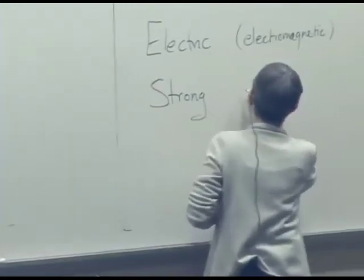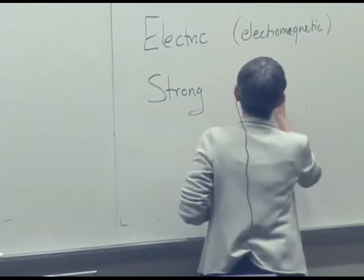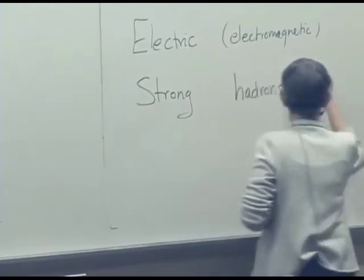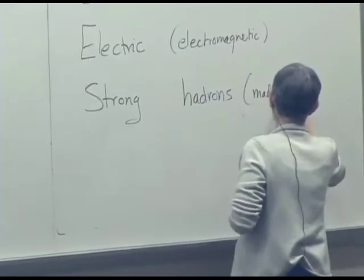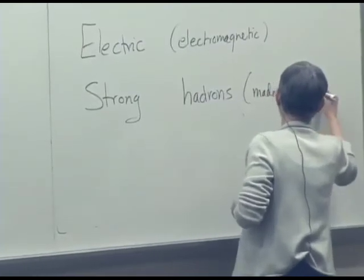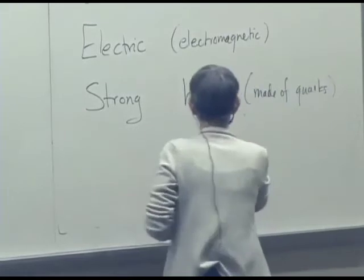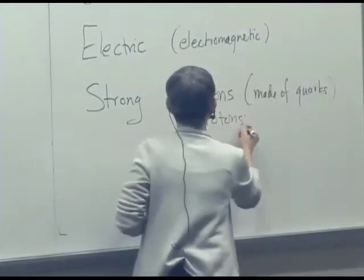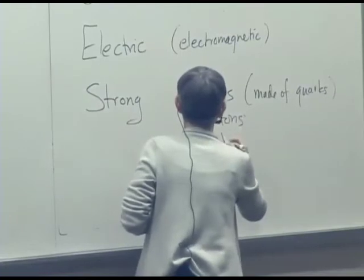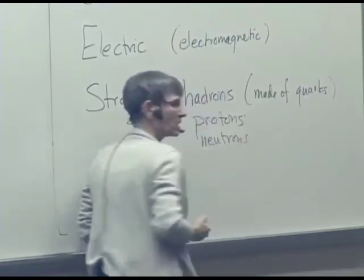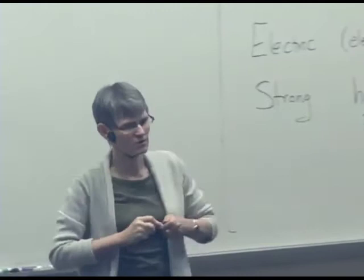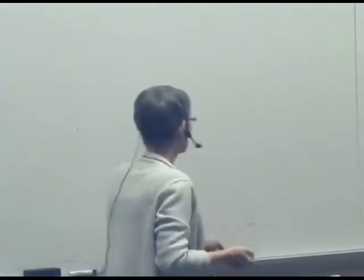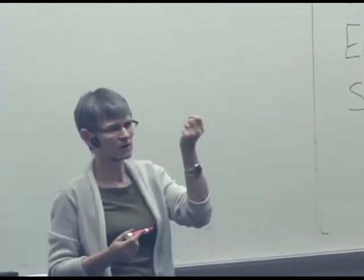So any particles that are made of quarks, they're called hadrons. And examples of particles that are made of quarks are protons and neutrons. And there are other things, but these are the most common. What the strong interaction does that you may be familiar with is hold atomic nuclei together.